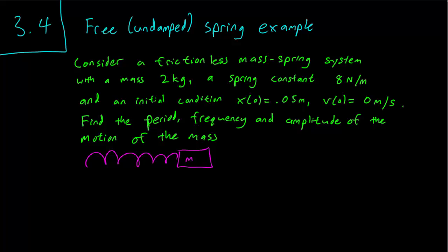Hello class, this is section 3.4 and we are going to go through an example of a mass spring problem where we have free motion or undamped motion. In other words, there is no friction and there is no damping.